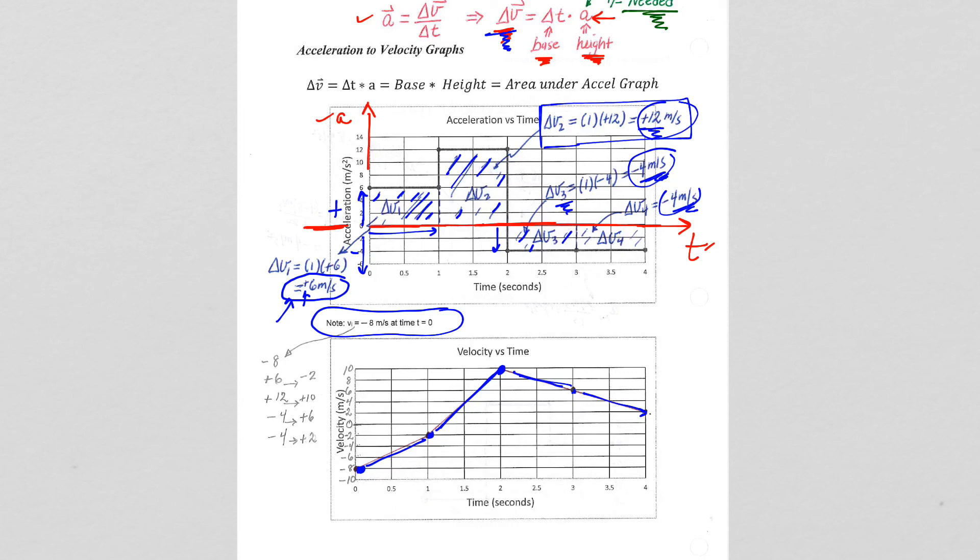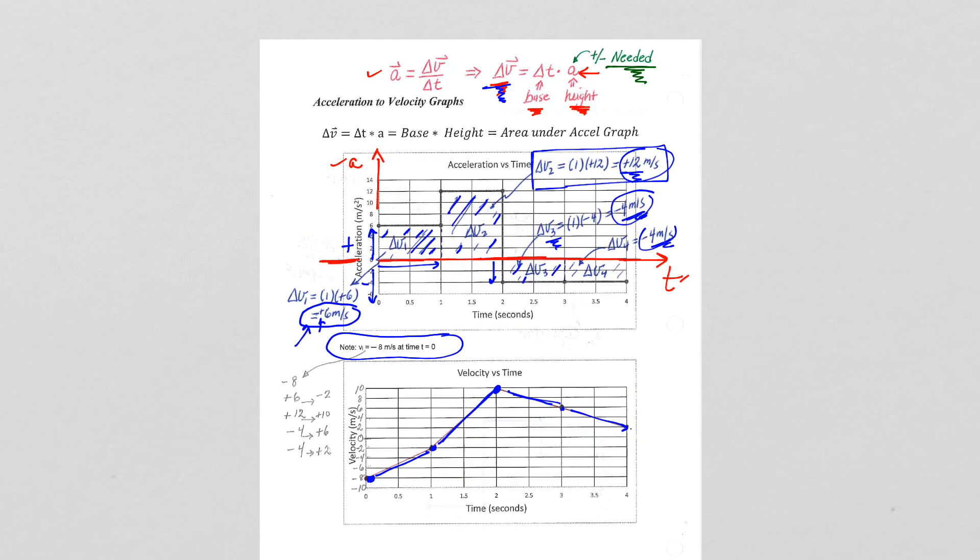we went from a velocity graph to a position graph. Then we got delta Xs. Same exact concept. And when eventually we do calculus, we'll understand these area calculations as integration. So short page of notes. Hopefully that makes sense to you based on what we've done up to this point. And we will move on.